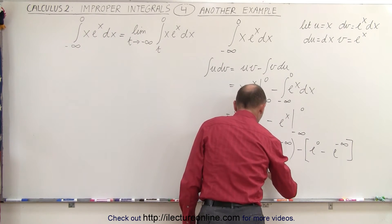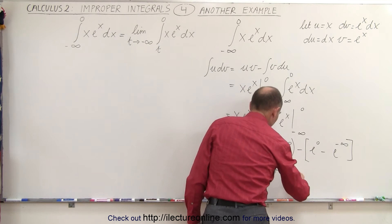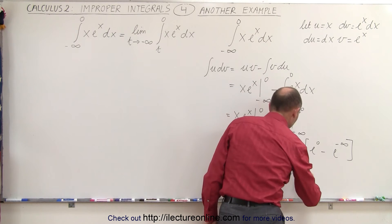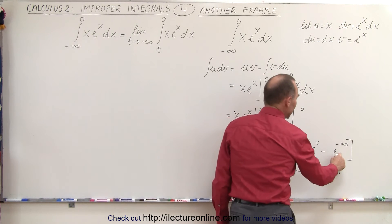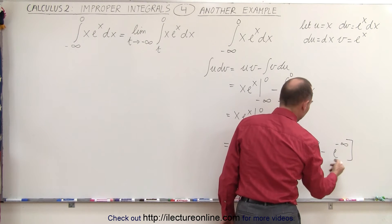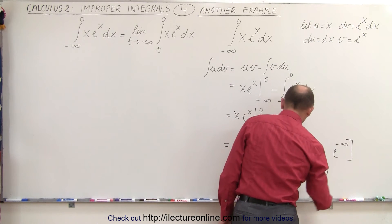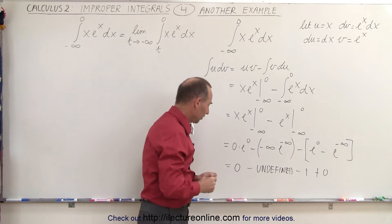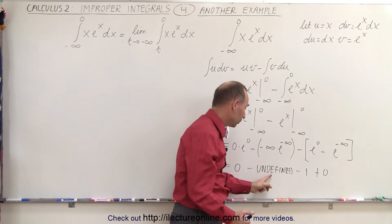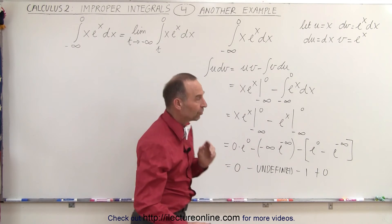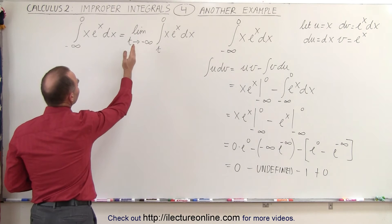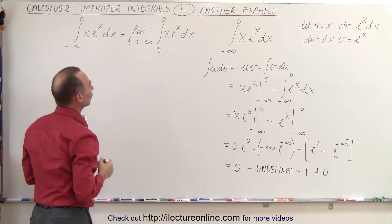So the answer comes out to 0 minus undefined, minus 1 plus 0 — we can't solve it because we don't know what the undefined term equals. Instead, what we should have done is taken the limit as t approaches negative infinity, replacing negative infinity with the lower limit t, rather than plugging in negative infinity directly.